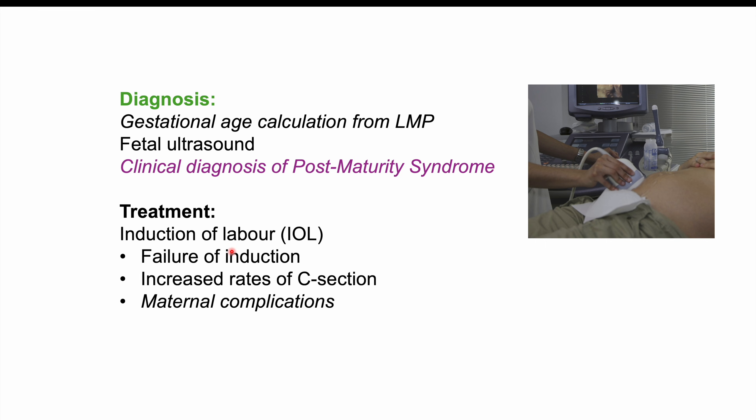Ultimately, treatment means preventing post-term pregnancy from occurring — avoiding going beyond 40 weeks gestational age and inducing labor appropriately. For infants with post-maturity syndrome, given potential hypoglycemia and respiratory insufficiency, they will be placed in the neonatal ICU for a period of time, though they will often be okay after a short stay.